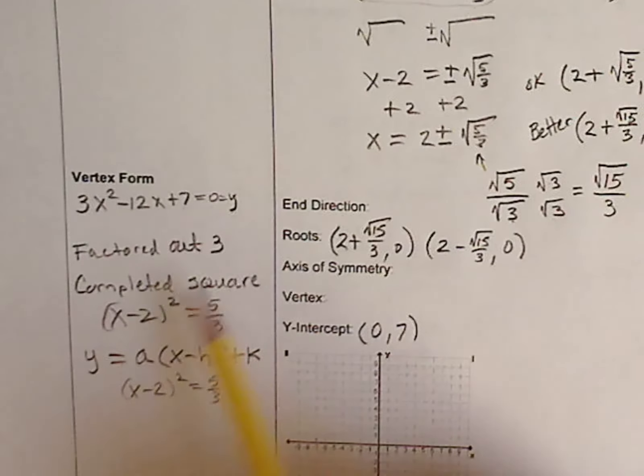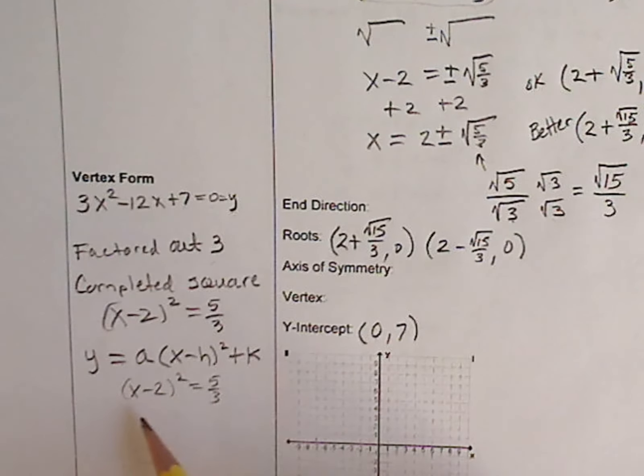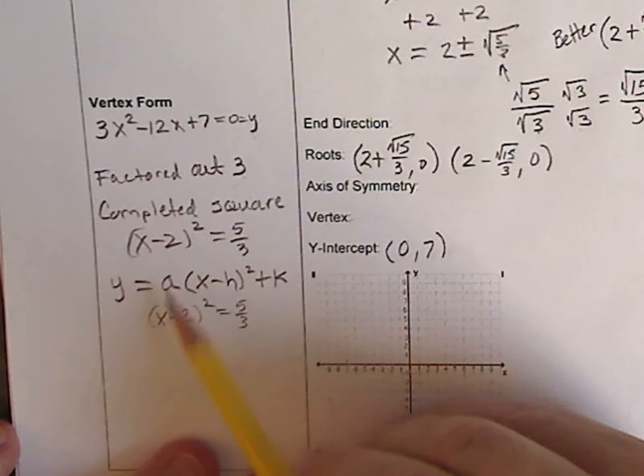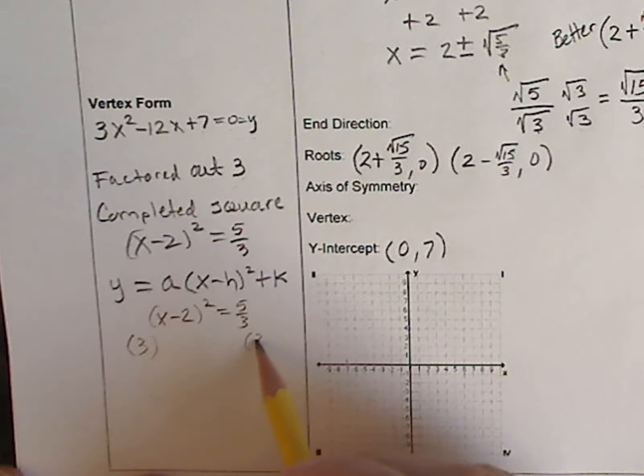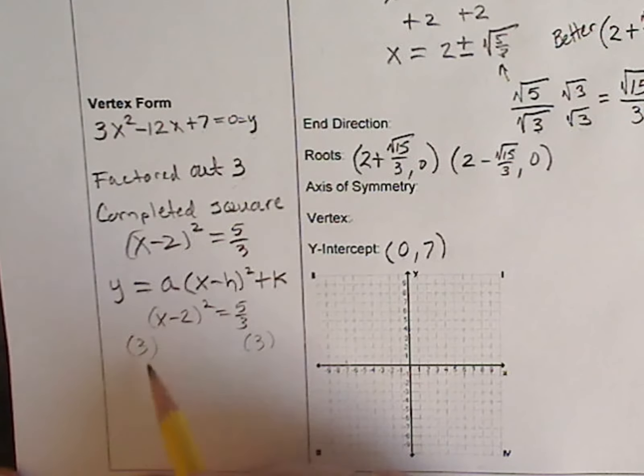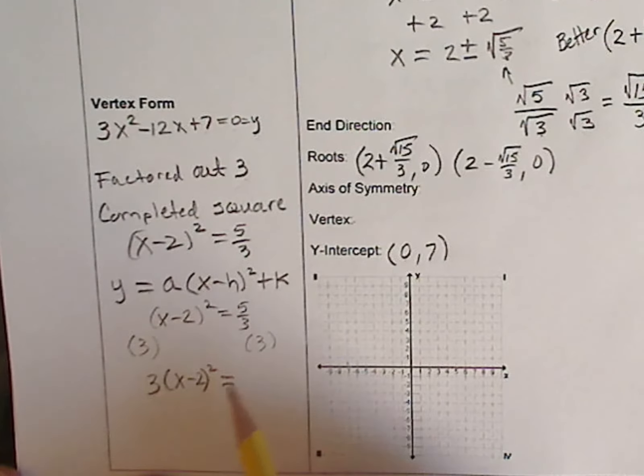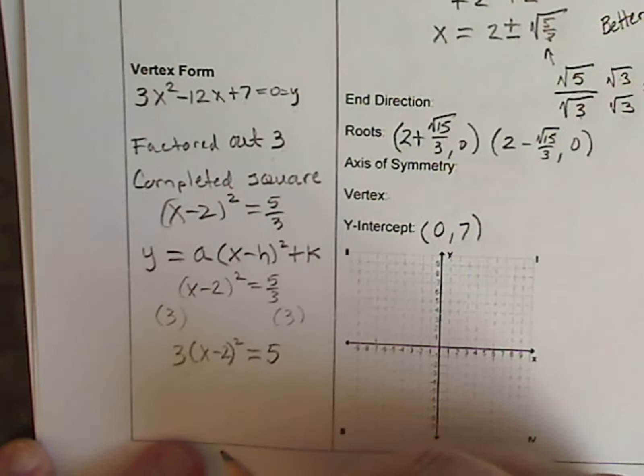Now, I told you we had to save that 3 that we factored out, because we need to put it back into our equation to get to the vertex form. This is actually our a. So I will multiply each side by 3. This becomes 3x minus 2 squared equals, and this is 3 over 1, so 3 times 5 is 15, divided by 3 is 5. We're very close to our vertex form.